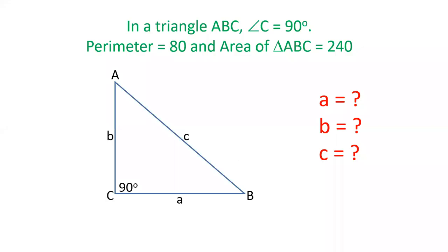Hello friends, welcome to our YouTube channel SSC Selector. In this question we have a right angle triangle whose perimeter is given as 80 and the area of the triangle is 240. We have to find out the length of each side of the triangle. Let's see how we can solve this question.